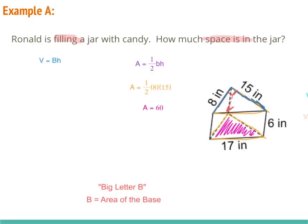Now that I know big B is 60, I can plug that into my main formula and I just need the height of my prism. The height of the prism is the line that connects the two bases together — in this case, that's the 6, which attaches the 15 and the 17 together. So plugging that in, I have 60 times 6. That gives us 360 cubic inches, since we're talking about volume.